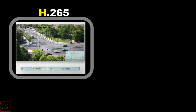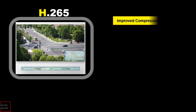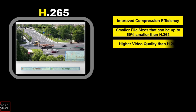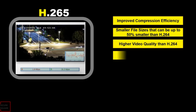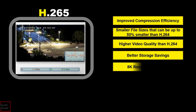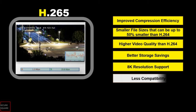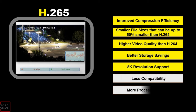The main advantages of H.265 include improved compression efficiency, smaller file sizes that can be up to 50% smaller than H.264, higher video quality than H.264, better storage savings, and 8K resolution support. However, there are cons: less compatibility with devices and more processing power required.